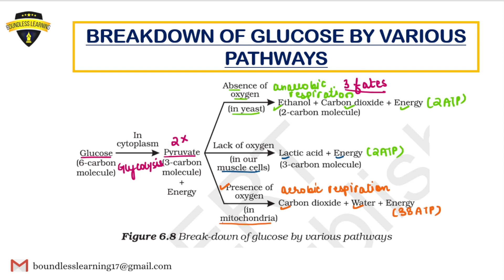So this was the breakdown of glucose by various pathways. This chart is very, very important. To revise: glucose, which is a six-carbon molecule, undergoes glycolysis to form a three-carbon compound which is pyruvate. There are three phases. If oxygen is present, then aerobic respiration takes place and the products are carbon dioxide, water, and 38 ATP of energy.